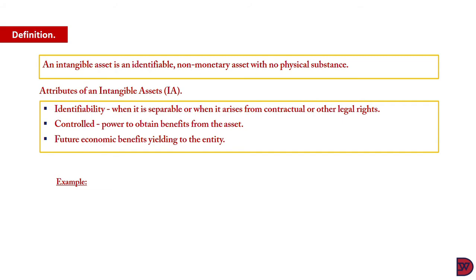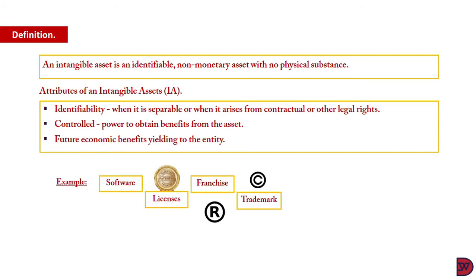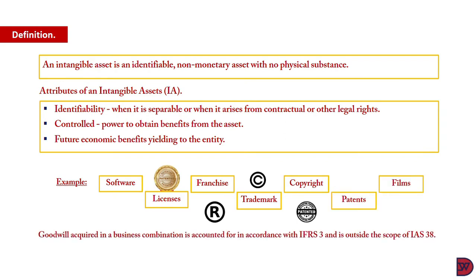Examples of intangible assets will include softwares, licenses, franchise, trademark, copyright, patent, and firms, to mention a few. Goodwill acquired in a business combination is accounted for in accordance with IFRS 3, which is business combination, and is therefore outside the scope of IAS 38.